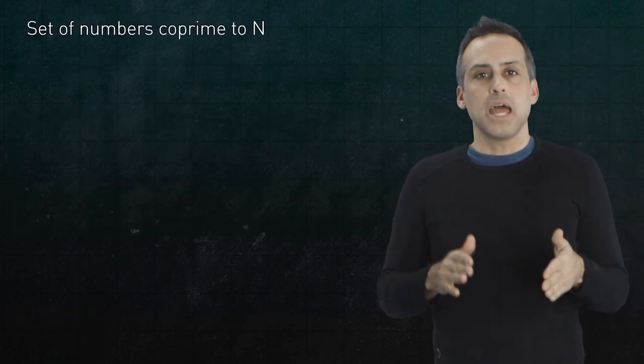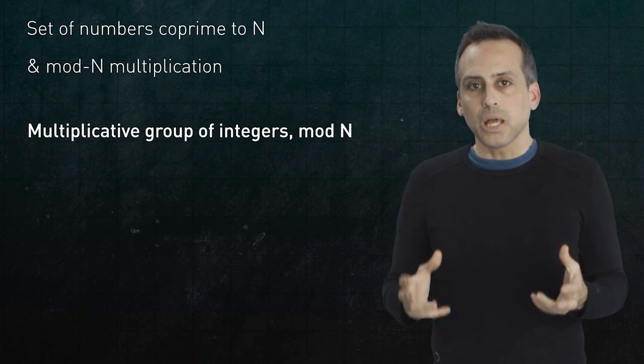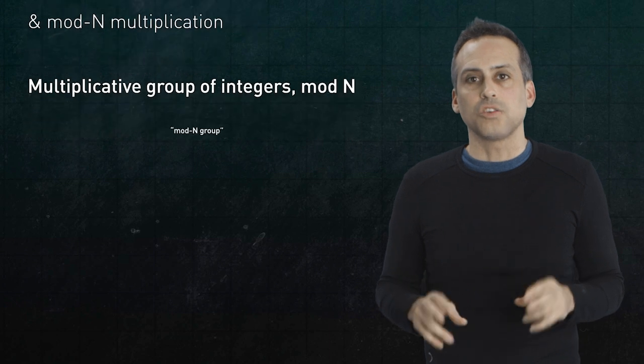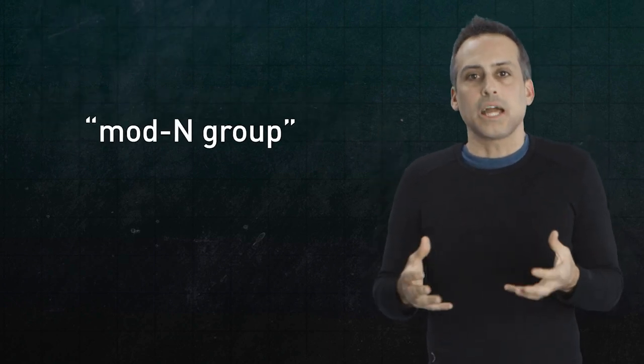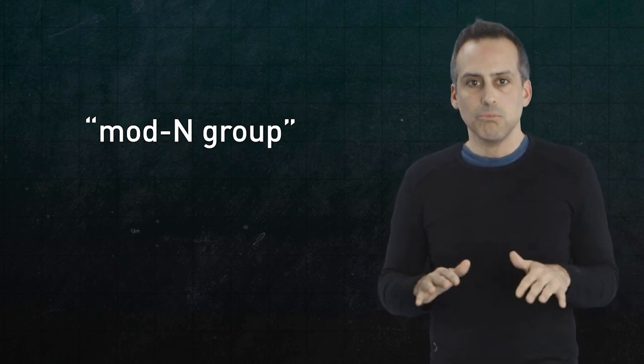The set of numbers coprime to n together with mod n multiplication is called the multiplicative group of integers mod n, which for this episode, I'll abbreviate to just the mod n group. By the way, group here doesn't just mean collection. It has a technical, mathematical meaning that we'll get into another time. Moving on.